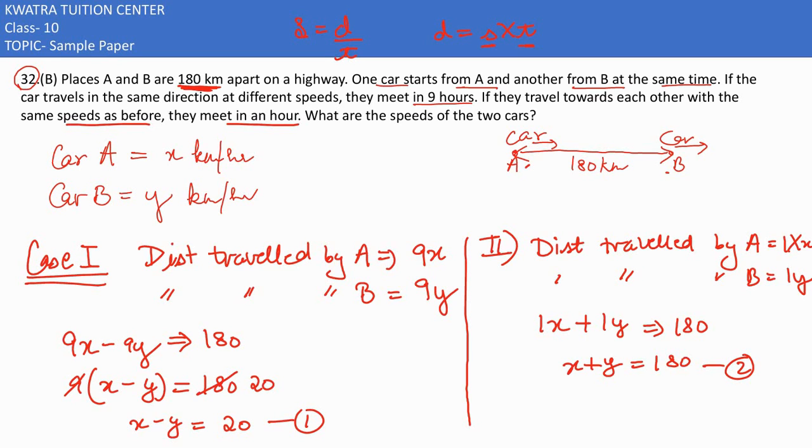Now let's use elimination method so we can get x or y value. I have x + y = 180 and x - y = 20. Change the signs. x cancels, y plus y is 2y, and 180 minus 20 is 160, so y would be 80.